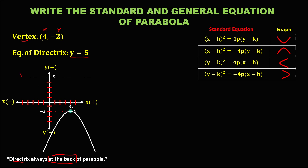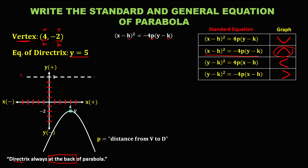Since the parabola opens downward, this is the formula for the standard equation. To solve for h, p, and k: h and k come from the vertex, so h is positive 4 and k is negative 2. For p, it is the distance from vertex to directrix. Counting from vertex to directrix: 1, 2, 3, 4, 5, 6, 7. Therefore, p is equal to 7.